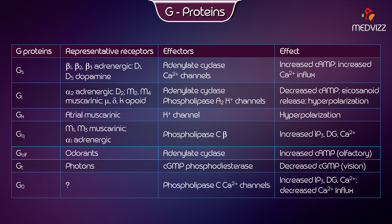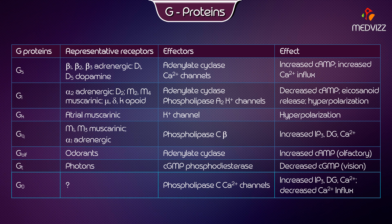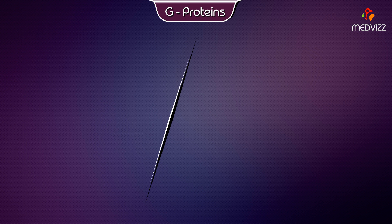G-Protein Golf: representative receptors are odorant receptors. Effectors are adenylate cyclase, and the effect is increased cyclic AMP for olfactory signaling. G-Protein Gt: representative receptors are photons. Effectors are cyclic GMP phosphodiesterase, and the effect is decreased cyclic GMP, mediating vision. G-Protein G0: effectors are phospholipase C and calcium channels, and the effect is increased IP3, DAG, calcium, and decreased calcium influx.